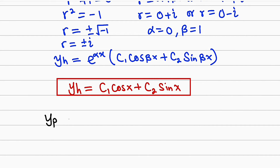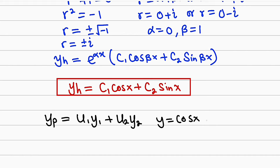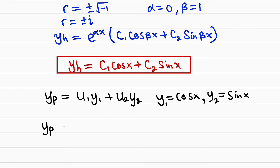For the particular solution, it is equal to u1·y1 + u2·y2, where u1 and u2 are unknown functions of x that we need to find. From the homogeneous solution, y1 = cos(x) and y2 = sin(x). So the particular solution becomes y_p = u1·cos(x) + u2·sin(x). We need to find u1 and u2, and that is where the idea of the Wronskian comes into play.